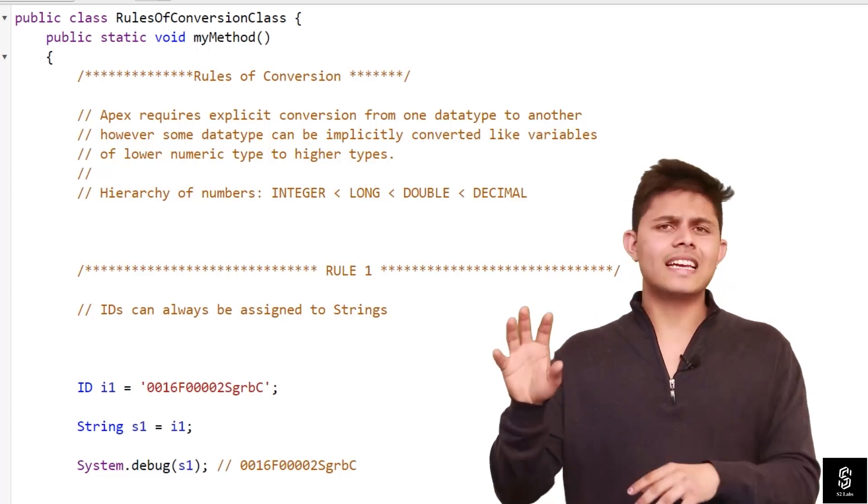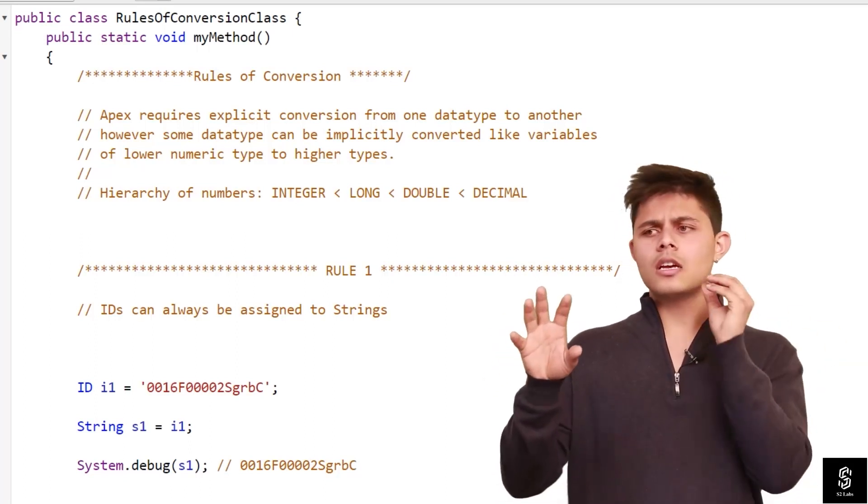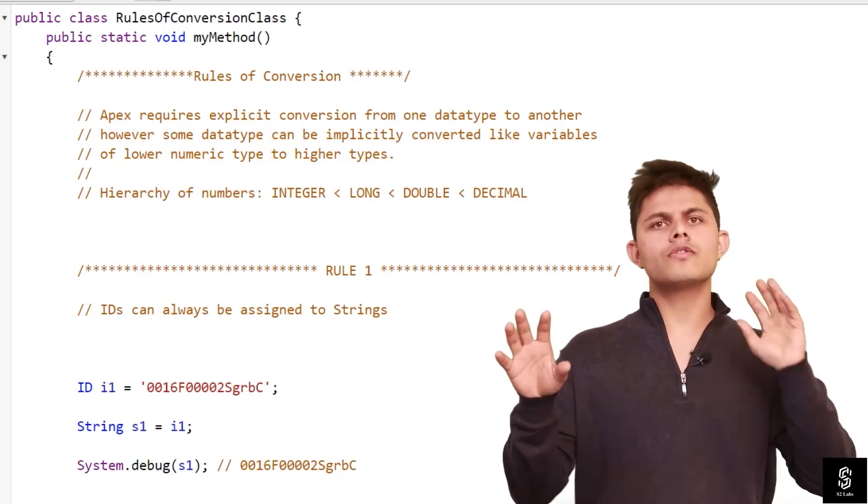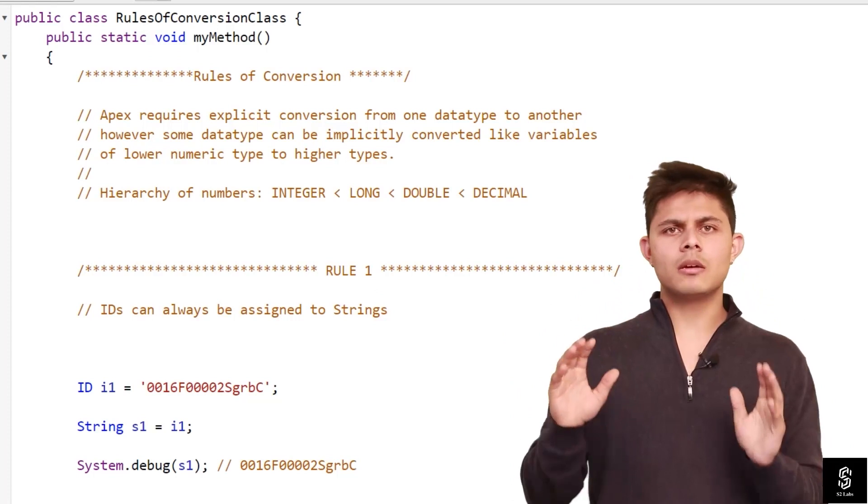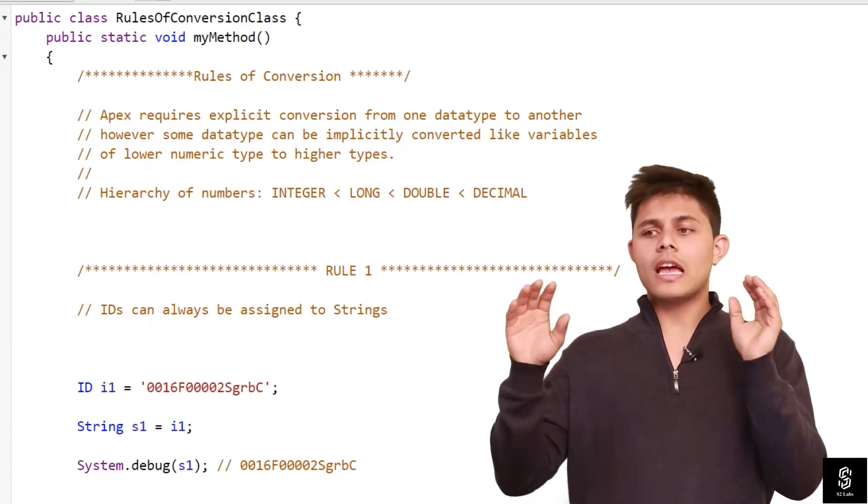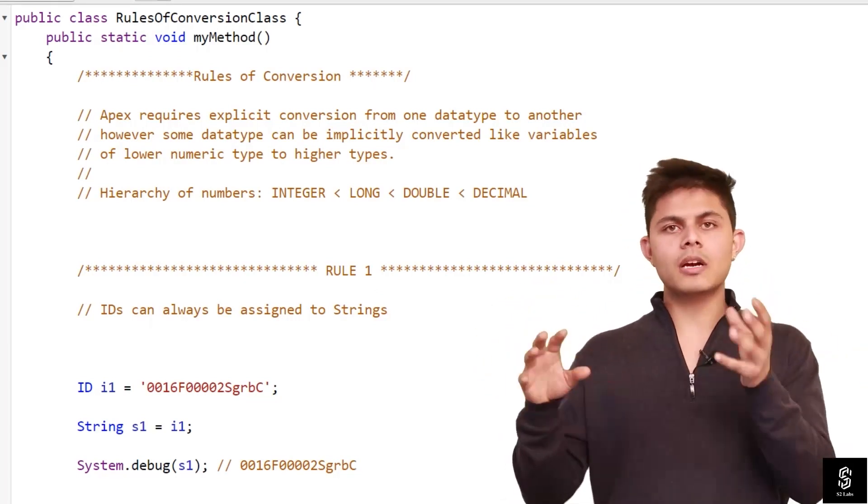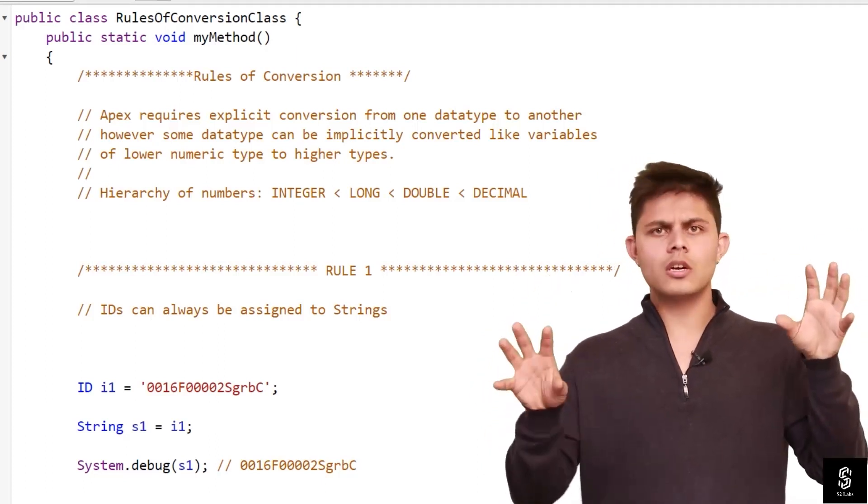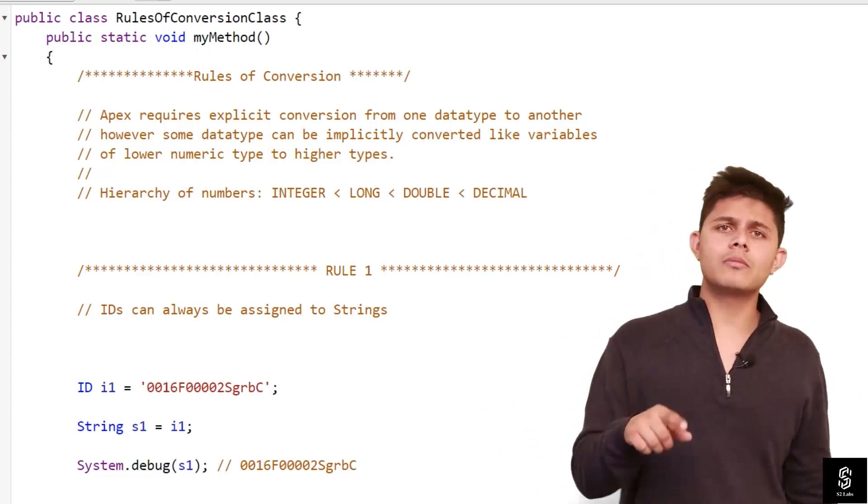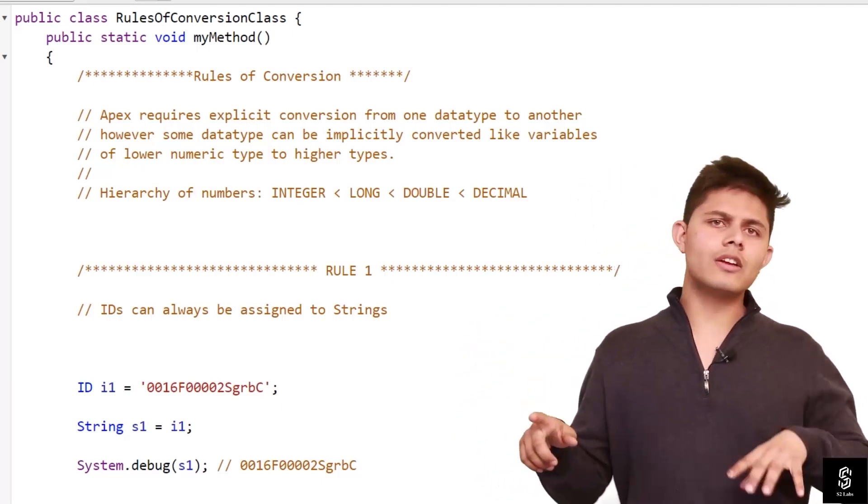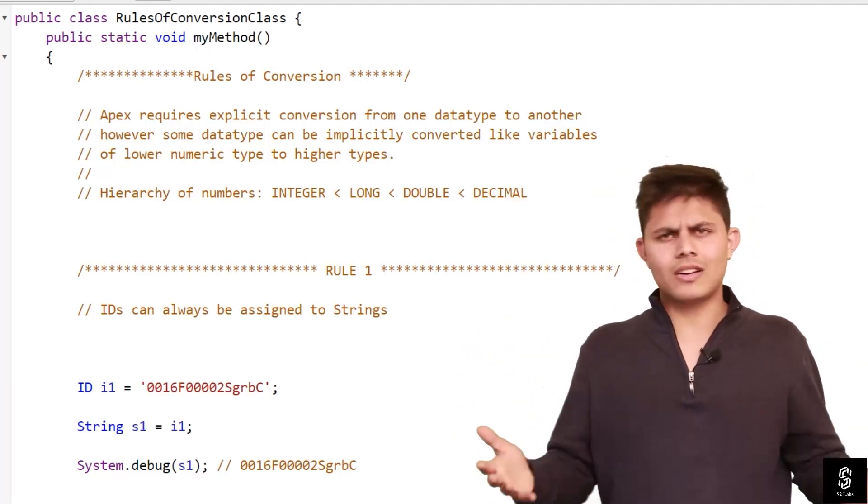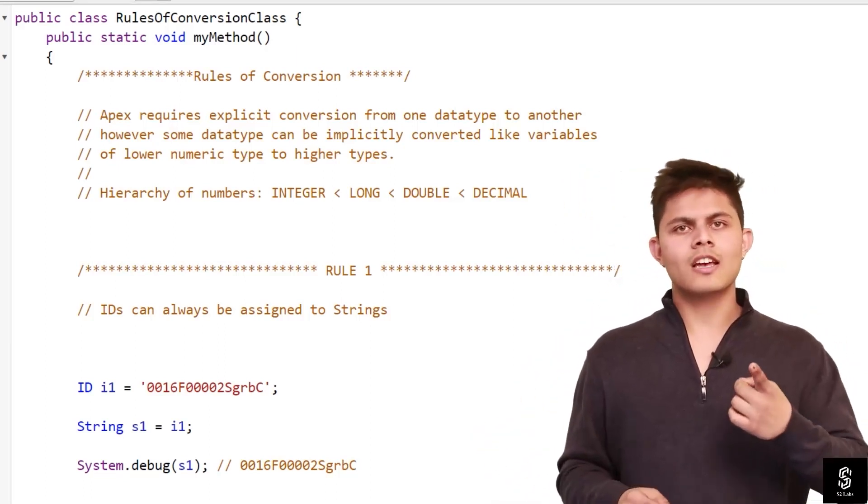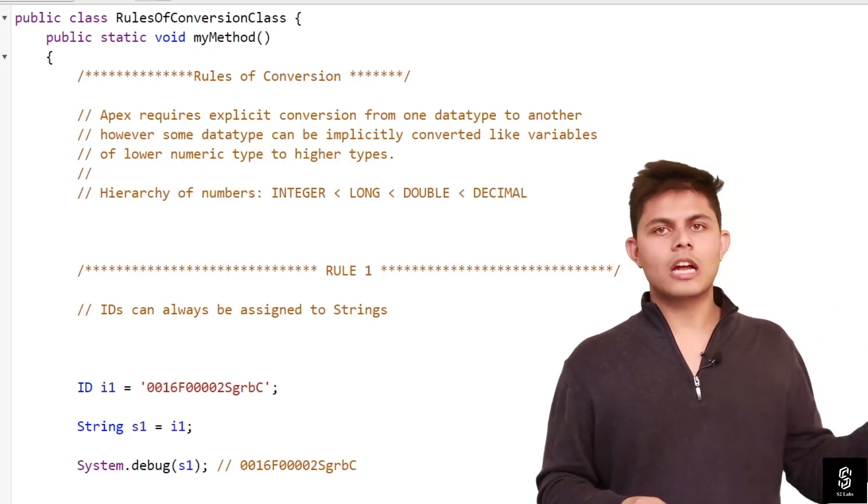then only 2 will be stored inside this i variable. 0.8 will be gone. For that you need to typecast it because Apex does not allow implicit type cast conversion from higher numeric type to lower numeric type, which is double to integer. When it comes to storing an integer value into a decimal value, you can do that. Vice versa is not possible because you need to explicitly typecast that value to that particular data type.